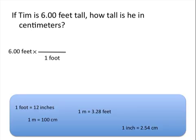Let's look at some conversion factors we have available to us. We can see that 1 foot is equal to 12 inches. We already have feet on the bottom, so we know that we need to put inches on the top. This allows us to cancel out feet. And if we were to stop this problem right now, we would have an answer in units of inches.